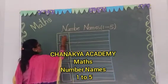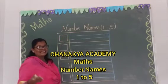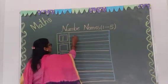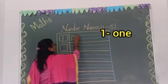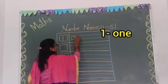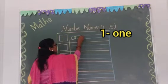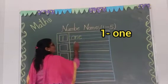First of all, write your number 1 in the box. And spelling of number 1: O, N, E. Okay, one.